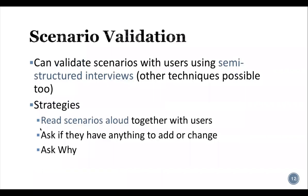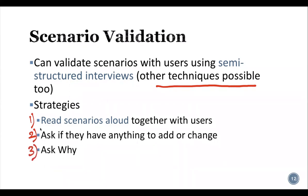Scenario validation is used to validate scenarios with certain users. This can be done using semi-structured interviews or even workshops. The strategies in scenario validation: first, read the scenarios aloud together with users; second, ask if they have anything to add; and based on their answers, many 'why' questions should be raised.